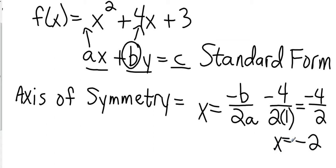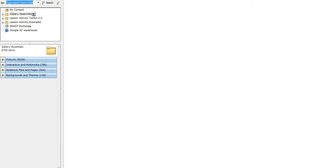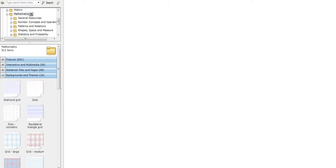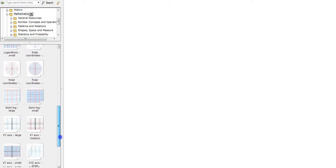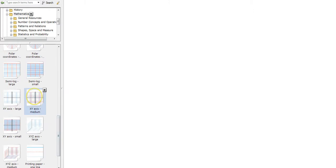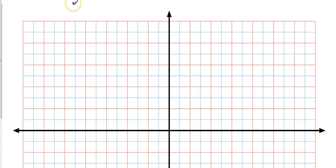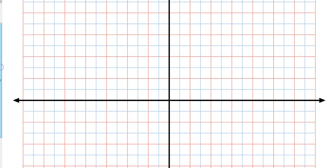Okay, so my axis of symmetry is x equals negative 2. So I'm going to go over on a graph and where is x equal to negative 2? And that's going to be two spaces to the left. So what I'm going to do is I'm going to draw a dashed line on x equals negative 2.